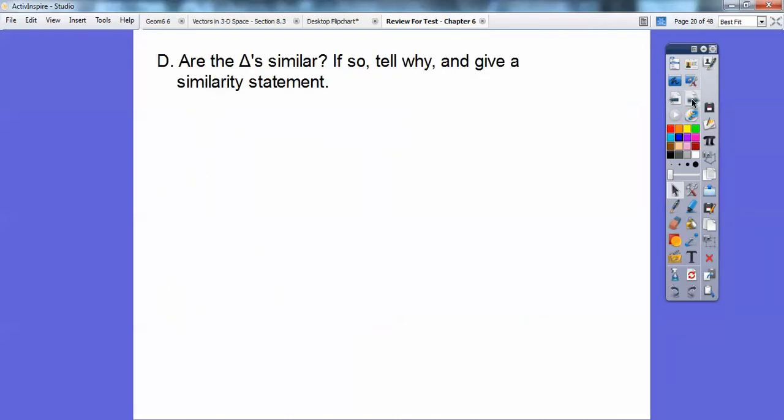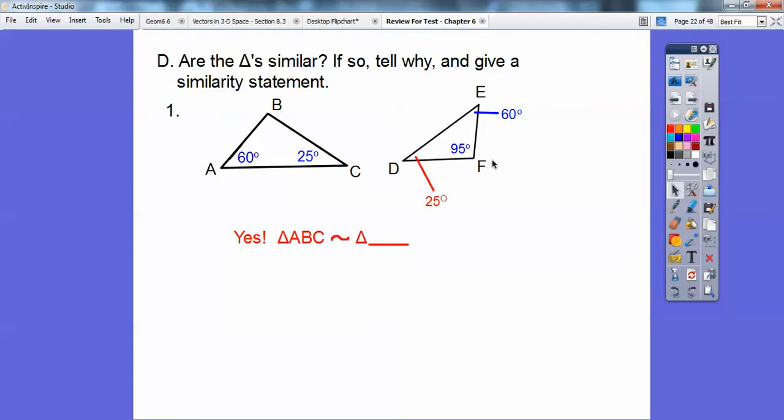Alright, so are these triangles similar? So tell why and give a similarity statement. Okay, my students had a hard time seeing this one today. So are these triangles similar? You have to do a little arithmetic to find out this angle right here and or this angle. I think I found this angle. And when you find out from 180, I find out that these guys, that's 25. So I got a 25 and a 60. So here's a 25 and a 60. So I got to put them in the correct order. I went from A, B, C.